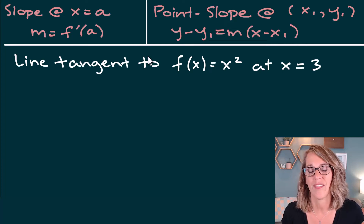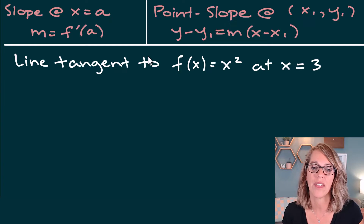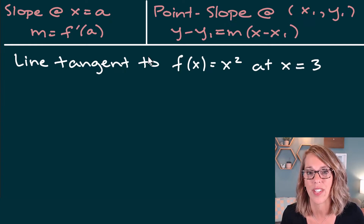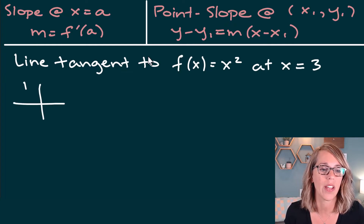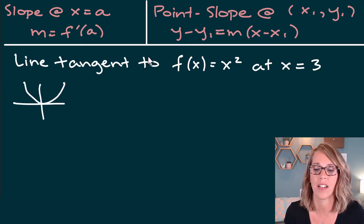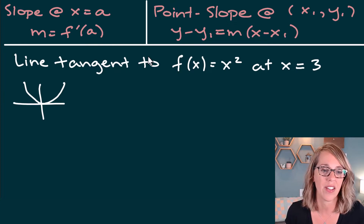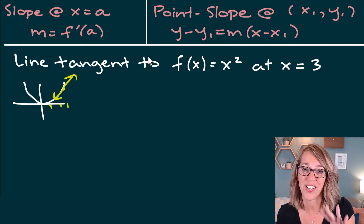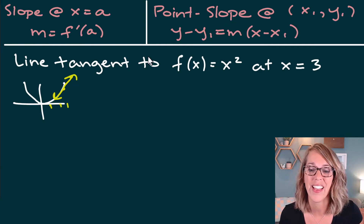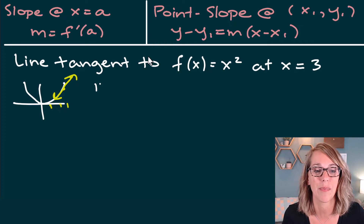We're going to look for equations of tangent lines, starting with this first example. I've got the line tangent to f(x) = x² at x = 3. I'm looking to find a line that just perfectly touches that curve. I'm going to show this on a graph as soon as I'm finished with all of the math, using a three-step process.